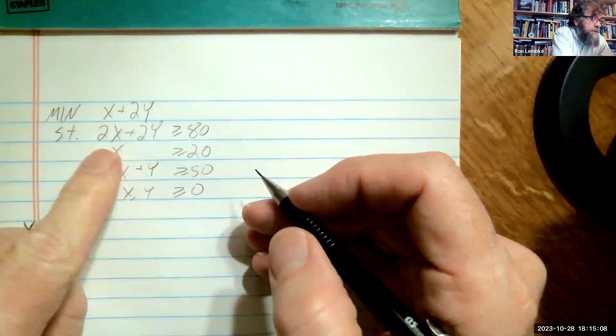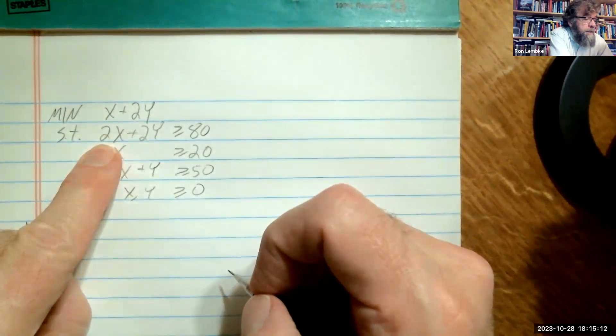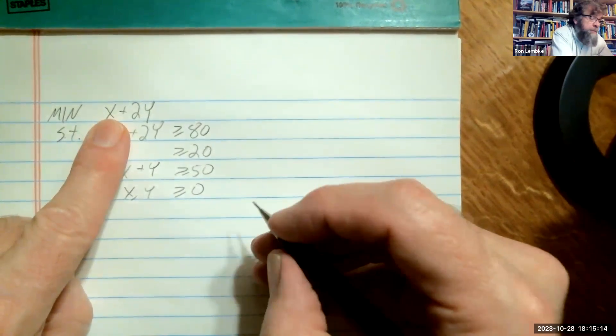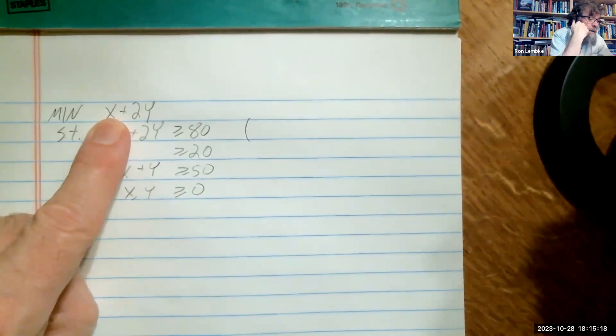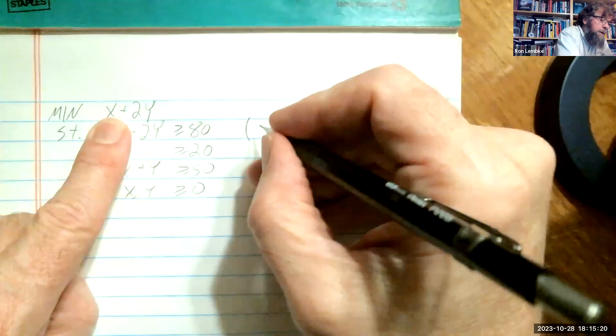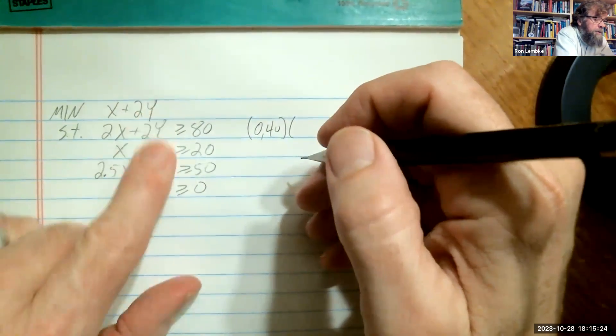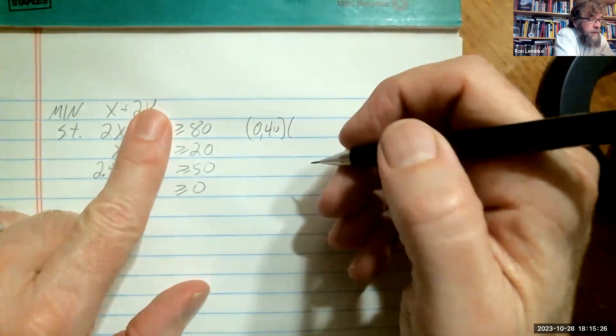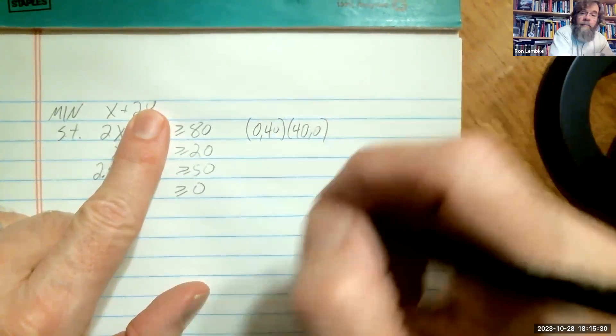So to find the endpoints, in each constraint, we put in a 0 for x. So we have 2y is greater than or equal to 80, so that would mean y would need to be 40. And then if we put a 0 in for y, we have 2x equals 80, so x would have to be 40 to make that be true.